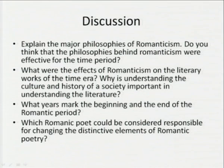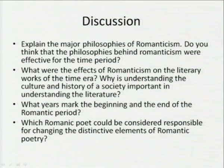Coming to the end: in understanding the Romantic age, we have to understand the major philosophies of Romanticism, the influence of Germany as well as France, how it crossed borders to America, and how it flowered into a different form of creative output — the most creative, the most abundant, the most fantastic, the most beautiful, and at the same time the sincerest, the most simple, and the most essential. Discussion questions: What were the effects of Romanticism on the literary works of the time? What years marked the beginning and end of the Romantic period? Which Romantic poet could be considered most responsible for defining the distinctive elements of Romantic poetry? I hope you enjoyed this and will understand Romantic poetry better when you study Keats, Shelley, Wordsworth, and Coleridge with this background. Thank you.